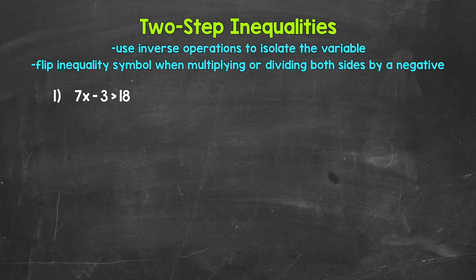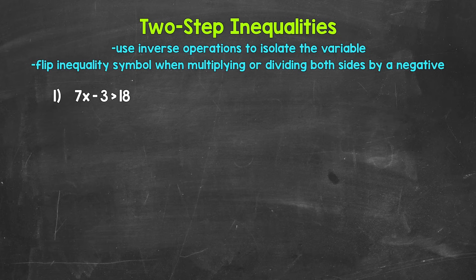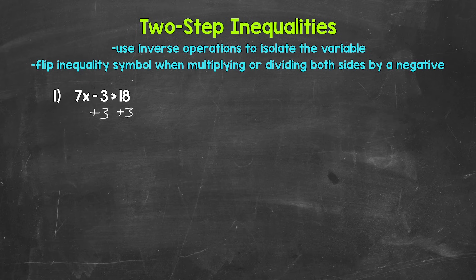Let's jump into number one, where we have 7x minus 3 is greater than 18. Just like with a two-step equation, we want to undo the subtraction first. We go in the reverse order of operations to undo the operations and isolate the variable — so undo the subtraction first, then the multiplication. The inverse operation of subtraction is addition, so add 3 to the left side. Whatever we do to one side of an inequality, we must do to the other to keep it balanced, so add 3 to the right side as well. These threes cancel each other out, so we have 7x is greater than 18 plus 3, which gives us 21.